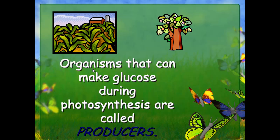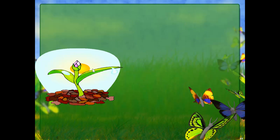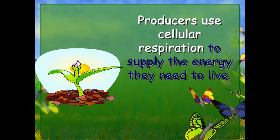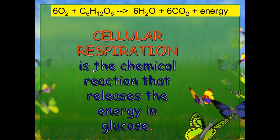Organisms that can make glucose during photosynthesis are called producers because they can produce their own food. Producers use most of the energy they make for maintaining normal life functions — to grow and reproduce. Producers use cellular respiration to supply the energy they need to live. Cellular respiration is actually the opposite of photosynthesis — those two processes work hand in hand.